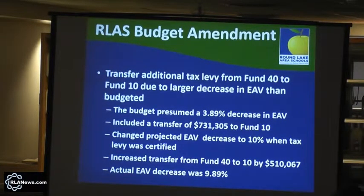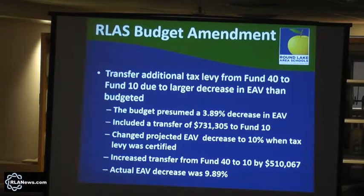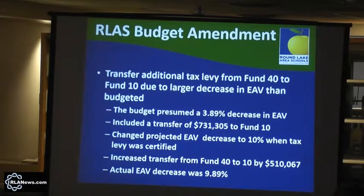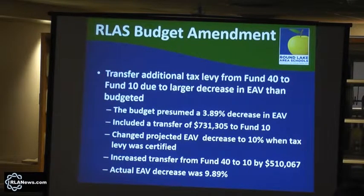So what is the amendment we're asking the board to approve? We are transferring additional tax levy dollars from fund 40 to fund 10 due to a larger decrease in EAB than we originally projected. The way the system works here in Illinois is not necessarily fair — the board adopts the budget in September, levies the tax in December, but we don't find out the actual EAB until April. So it's all guessing and projecting initially. In our case, we under-projected the EAB decline. We initially had $731,000 transferred from fund 40 to fund 10. When the board certified the levy, we changed that and added another $510,000 to make it $1.2 million, and we are correcting the original September budget with this budget amendment.